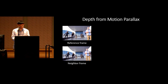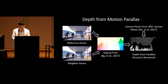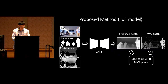We train a CNN to regress multi-view stereo depth from a single RGB frame, but we also include depth computed from motion parallax as additional input. We compute optical flow between reference and neighbor frames and convert to depth using camera poses. At inference time, depth in human regions from moving people is inaccurate, so we mask it out using a segmentation mask. Our full model takes as input the RGB frame, a human segmentation mask, masked depth from motion parallax, and an associated confidence map.